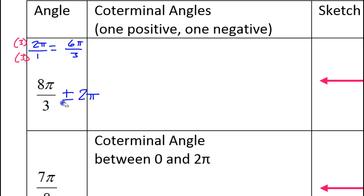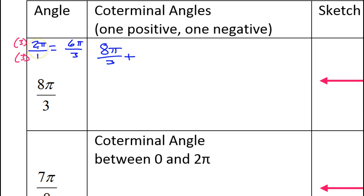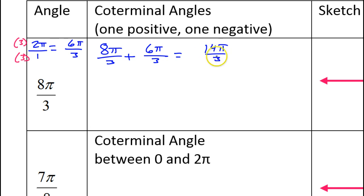I'm going to multiply the numerator and denominator by 3 to make a new fraction, so this would be 6 pi over 3. And 6 divided by 3 is 2, so you can see that this is the same as 2 pi. So I'm going to add: 8 pi over 3 plus 6 pi over 3, giving me 14 pi over 3. That is a positive coterminal angle.